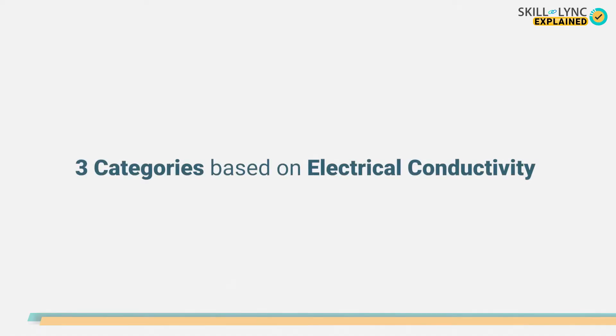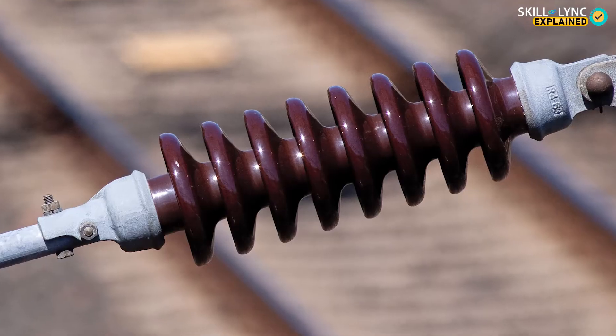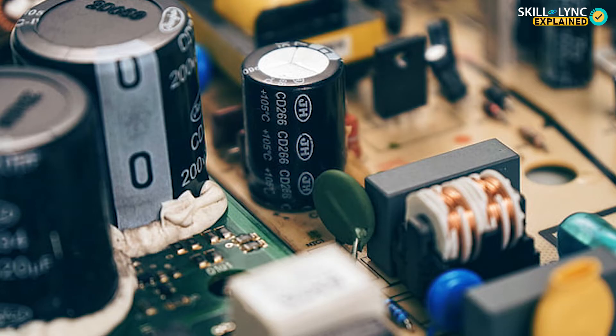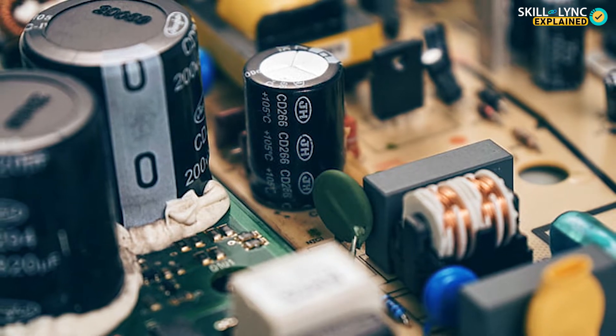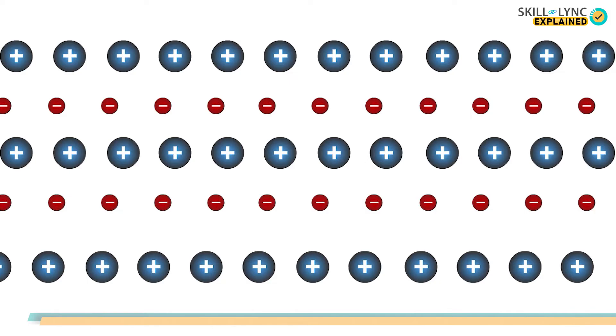Materials can be divided into three main categories based on their electrical conductivity. There are conductors which conduct electricity and insulators which do not. Then we have semiconductors that can be made to conduct electricity. The conductivity of a material is due to its internal structure.